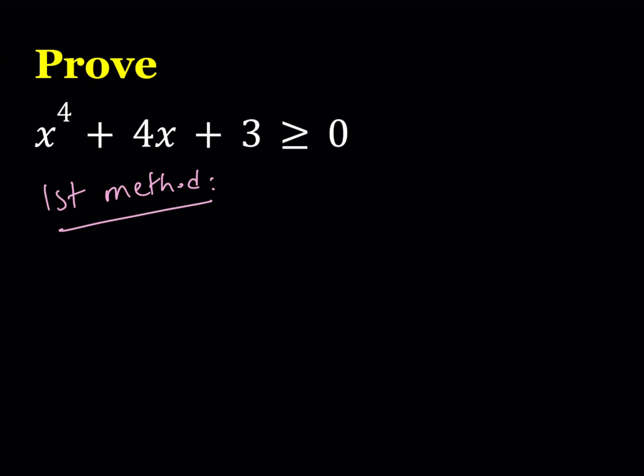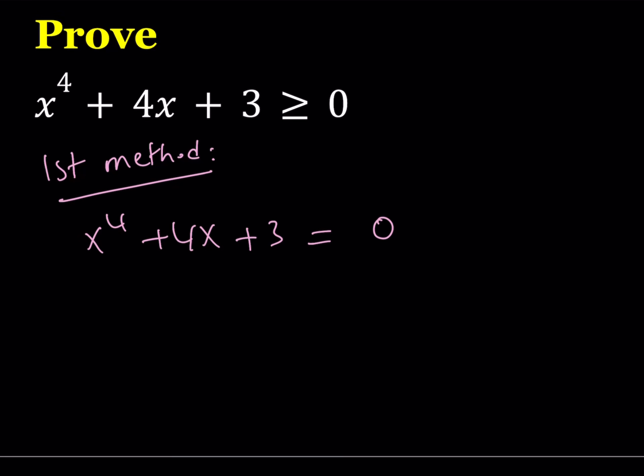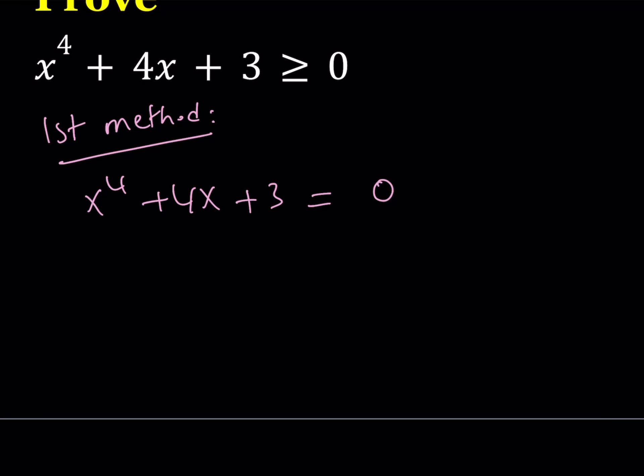I'm going to take this expression and break it down. Before I do, I want you to notice that if I set this equation equal to zero — of course we're not solving an equation, but it will help us understand what's going on — you'll notice that x equals negative one is a solution. The sum of the coefficients being zero tells us x equals one is a solution.